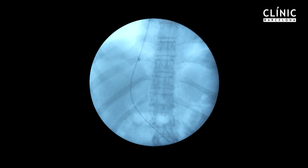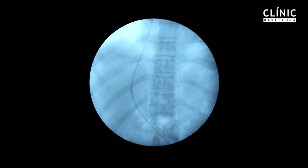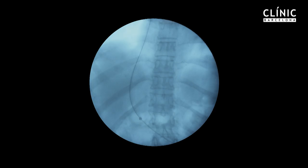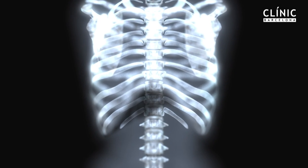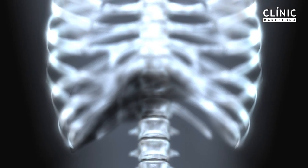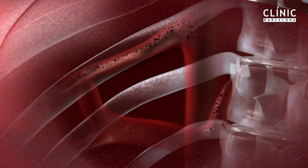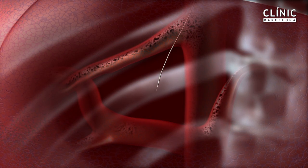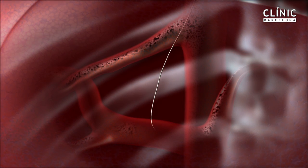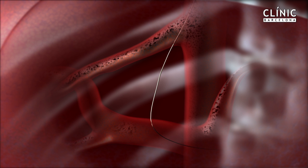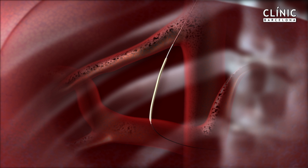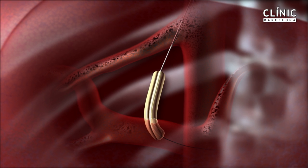Once the tract is dilated, the introducer sheath is advanced into the portal vein to allow subsequent release of the stent. In the animation review: a puncture from the hepatic to the portal vein is performed, allowing advancement of a guidewire, and the tract is then dilated with an angioplasty balloon connecting the two veins.